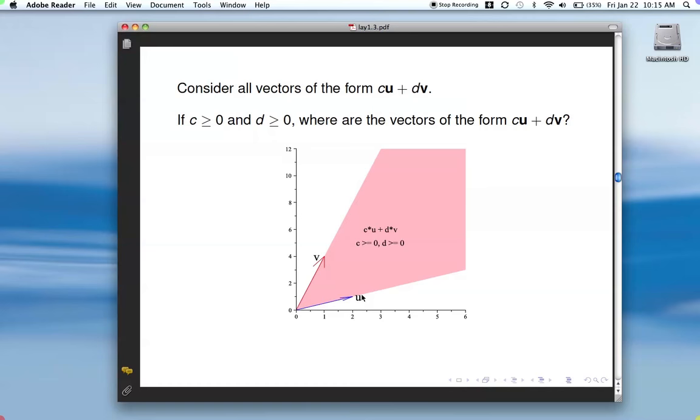If we do that, then the vectors that we can produce or generate are here in this cone defined by u and v. Because again, we can scale u to whatever length we want. We can scale v to whatever length we want. And then when we add, we complete the parallelogram, then we can end up with any vector in this cone area here.